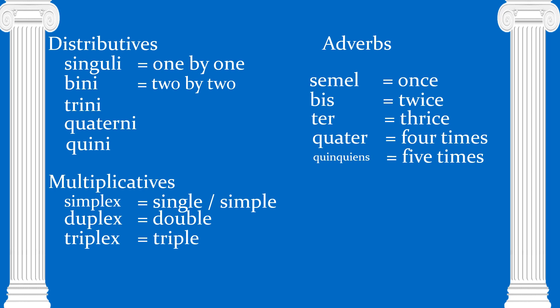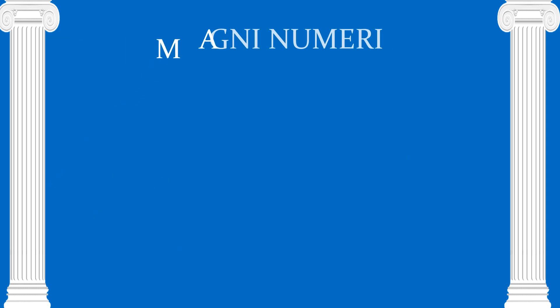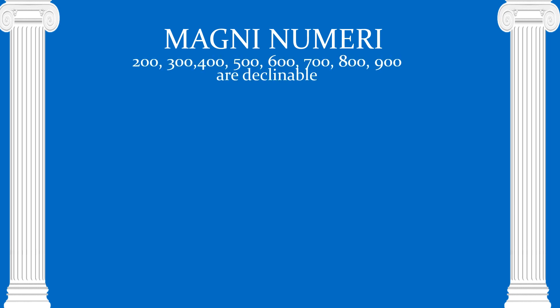We've also talked about the magni numeri — the big numbers. Two, three, four, five, six, seven, eight, and nine hundred are declinable, meaning they will be shown in different cases and in different genders. So we have ducenti, ducentae, ducenta — you should know that duc- means two and -centi means a hundred.